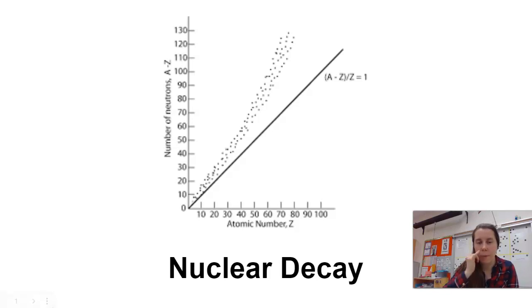Hello, today we're going to talk about nuclear decay, why an atom might have an unstable nucleus, the different kinds of decay, and how to predict the products or reactants using nuclear equations.